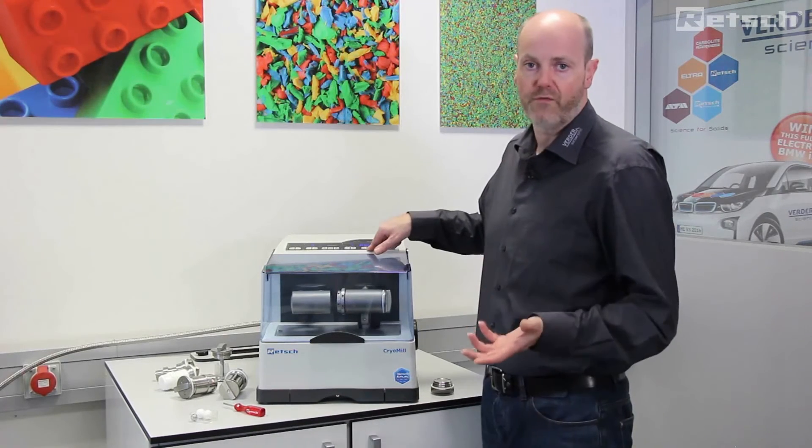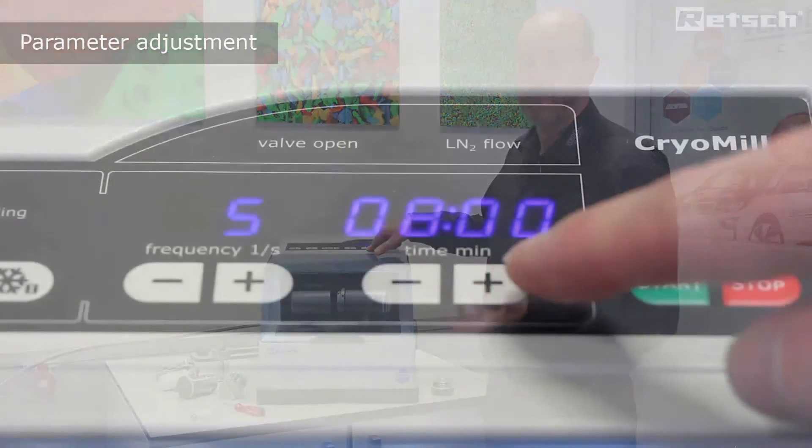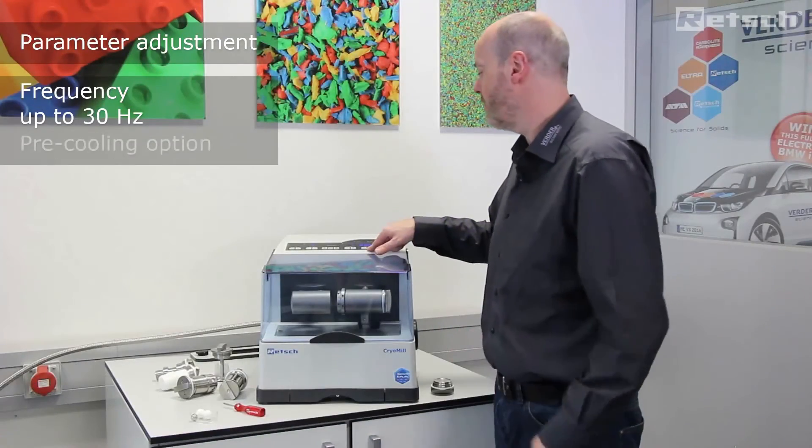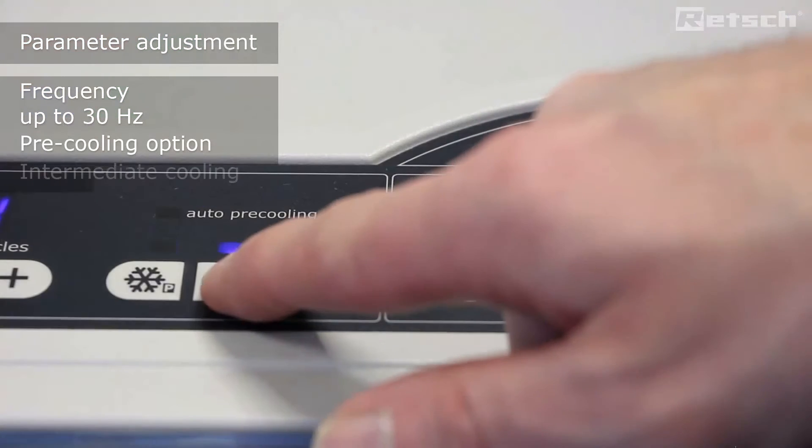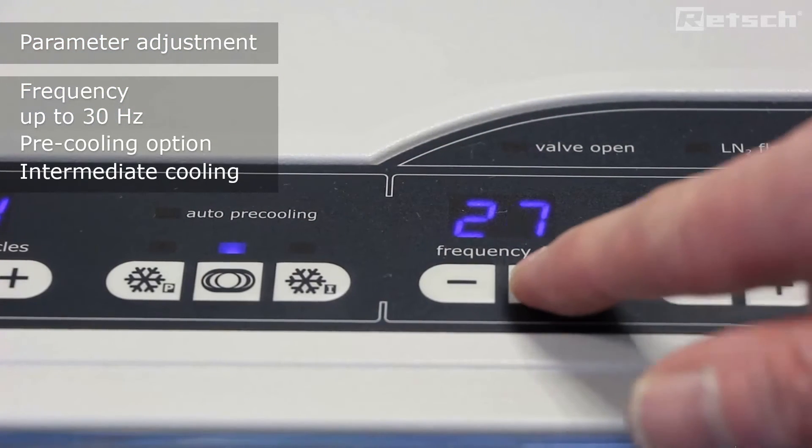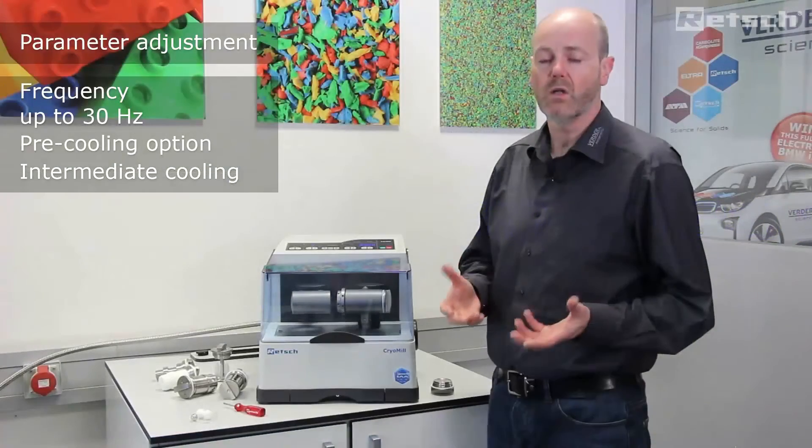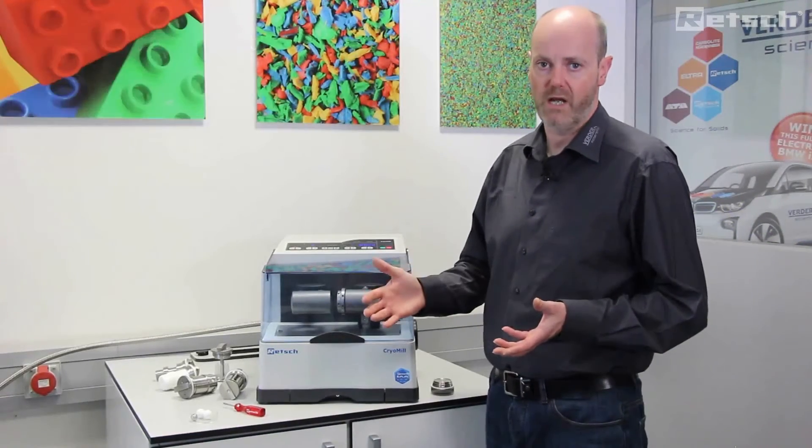Typically we will freeze the material for between 5 and 10 minutes in the pre-cooling phase, then we will set the time and the amplitude for the milling cycle itself. Typically a milling cycle will not exceed 3 minutes in duration.